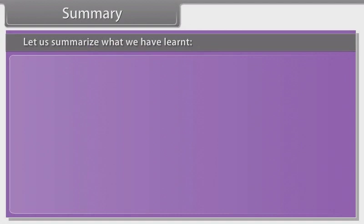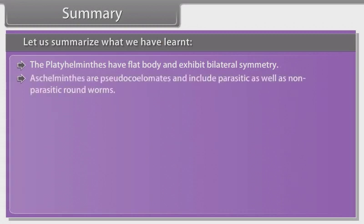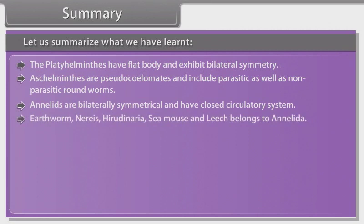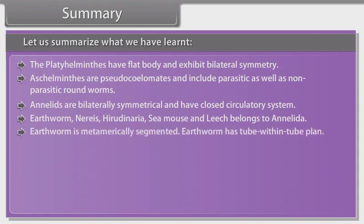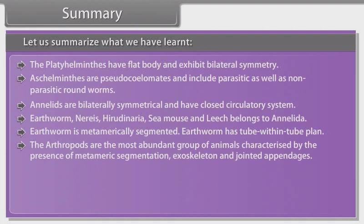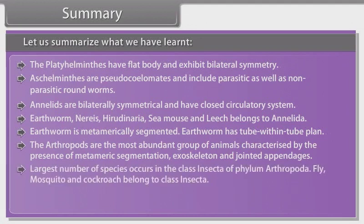Summary: The Platyhelminthes have a flat body and exhibit bilateral symmetry. Aschelminthes are pseudocoelomates and include parasitic as well as non-parasitic roundworms. Annelids are bilaterally symmetrical and have a closed circulatory system. Earthworms, Nereis, Hirudinaria, sea mouse and leech belong to Annelida. Earthworm is metamerically segmented and has a tube-within-tube body plan. The arthropods are the most abundant group of animals, characterized by metameric segmentation, exoskeleton and jointed appendages. The largest number of species occurs in the class Insecta of Phylum Arthropoda.